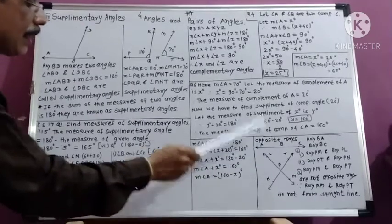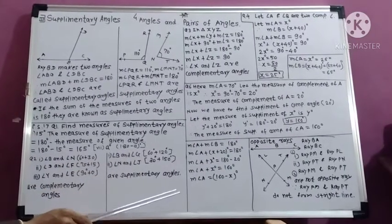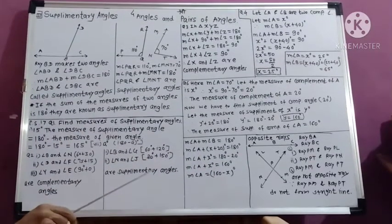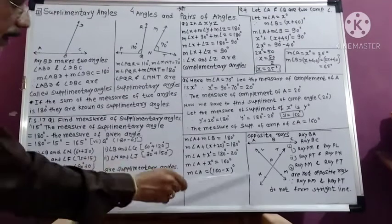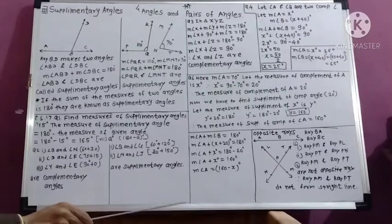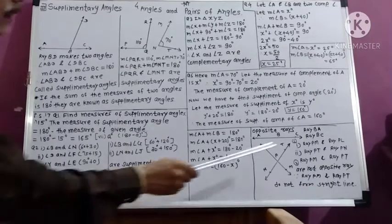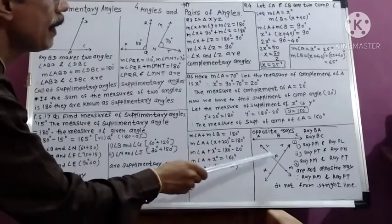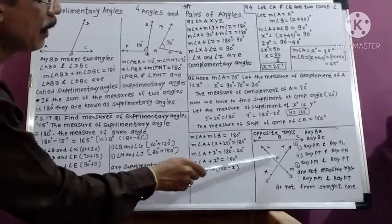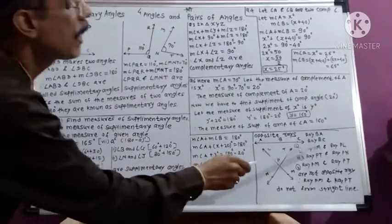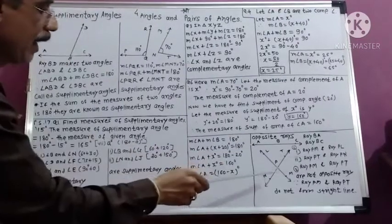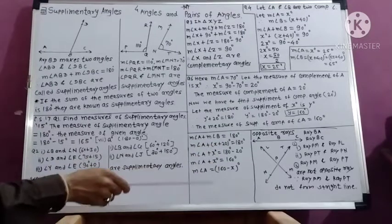To understand opposite rays, we solve Practice Set 18. In question 1, by observing the figure, we write the names of opposite rays. Ray PM and ray PL are opposite rays because they have a common origin and form a straight line. Also, ray PT and ray PN are also opposite rays — they have a common origin and form a straight line.